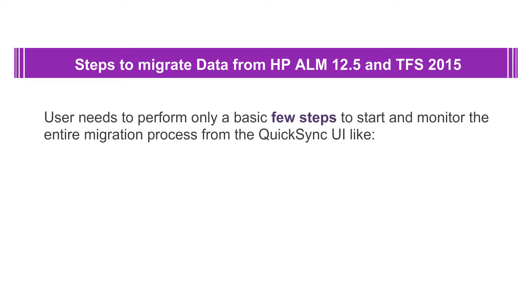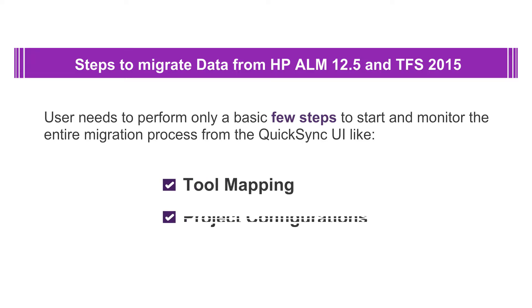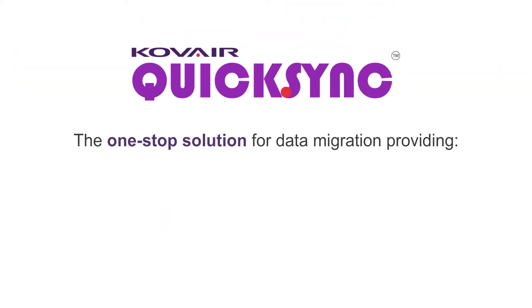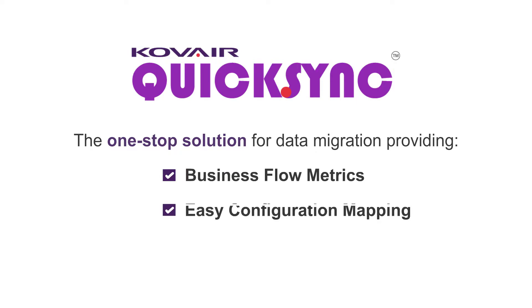Users need to perform only a few basic steps to start and monitor the entire migration process from the QuickSync UI, like tool mapping, project configurations, and business flow setup. Thus, Covert QuickSync is the one-stop solution for all your data migration needs — a feature-rich solution that provides business flow metrics, easy configuration mapping, and on-screen reports.